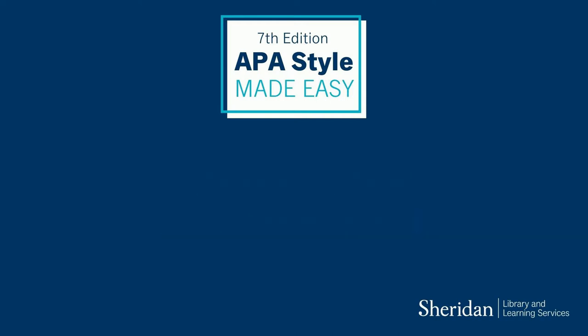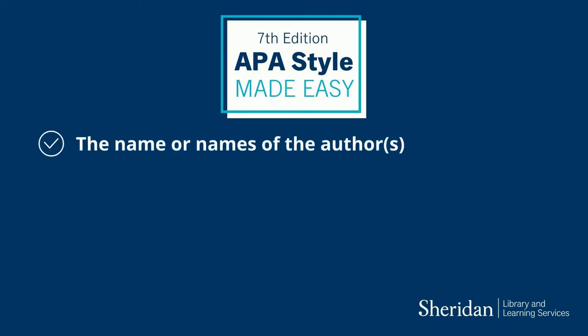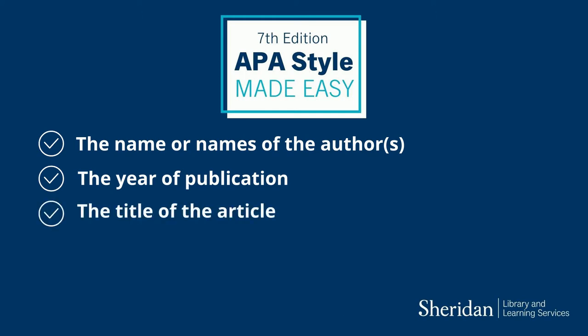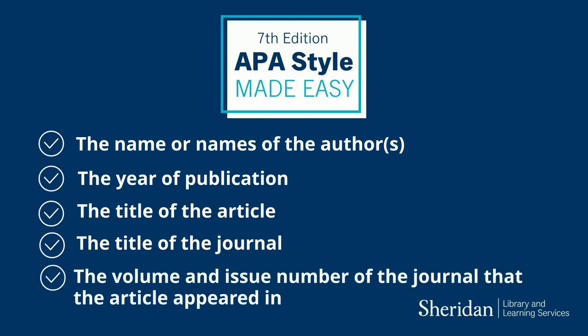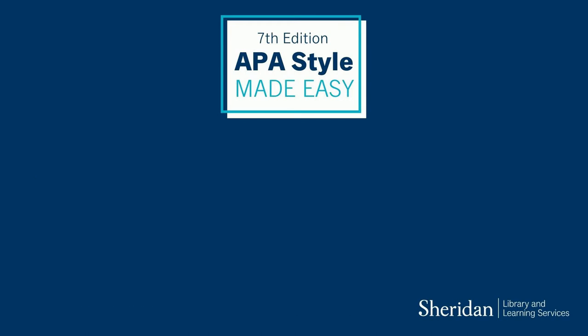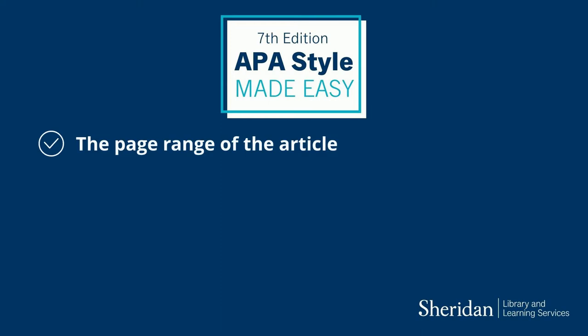To cite a journal article, you will need the name or names of the authors, the year of publication, the title of the article, the title of the journal, the volume and issue number of the journal that the article appeared in, the page range of the article, and the DOI or URL.